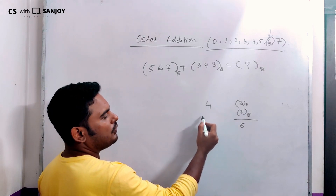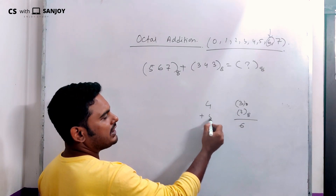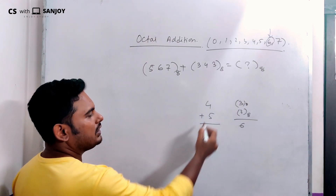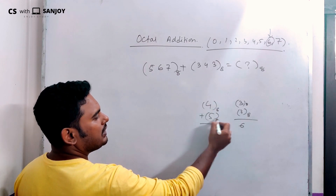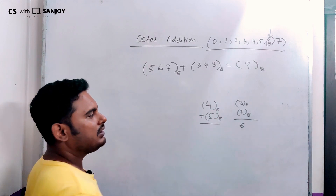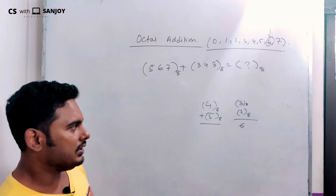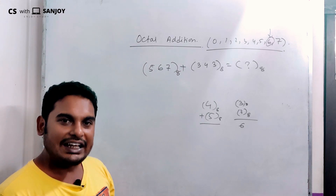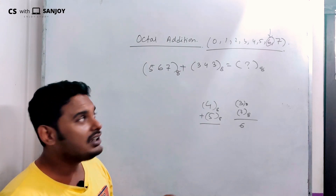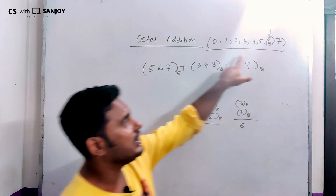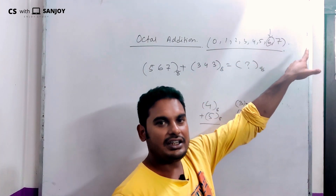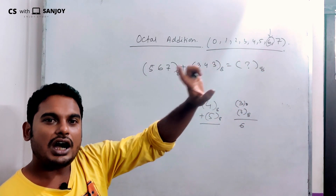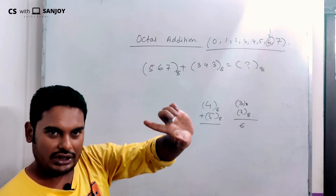Now, when we add the octal number 4 and octal number 5 — both are octal numbers, not decimal — we add 4 and 5 and get 9. But 9 is beyond the octal range, so we must handle it differently. In octal, 9 is represented differently since the base is 8.